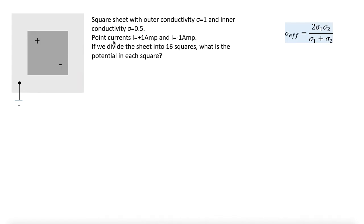We also have two point currents in here. This one is minus one amp, this is plus one amp, and we have ground in here. So basically the question is if we divide the sheet into 16 squares, what is the potential in each square?